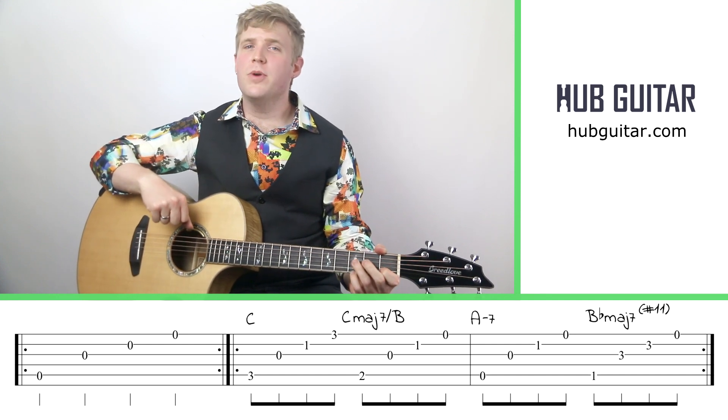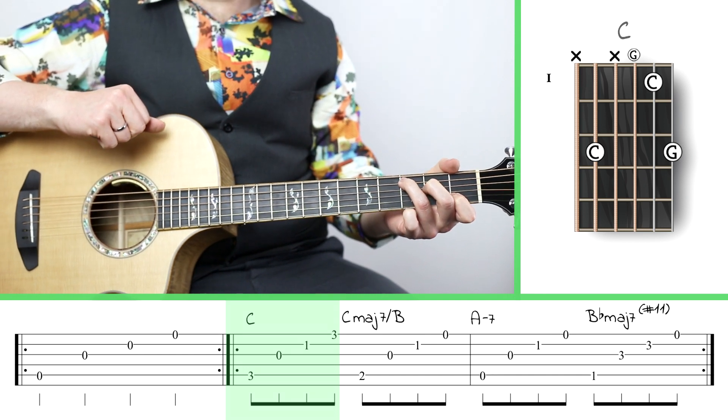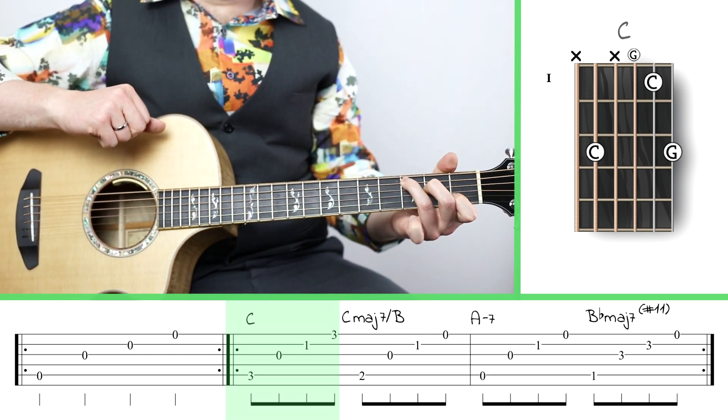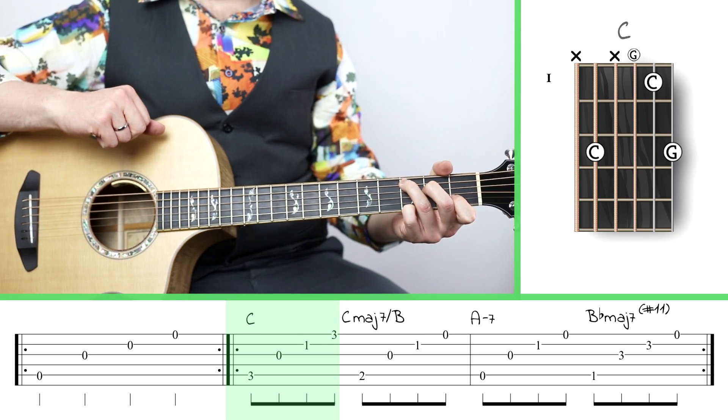So here we go. We're going to start with a C major chord. It's pretty similar to the familiar C major that we all know, except that we've got a G on the top of the chord. So to get that, I need to put my pinky on the third fret of the high E string.